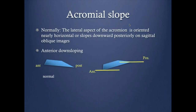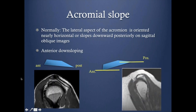Anterior downsloping of the acromion is seen only in the sagittal plane. Normally, the anterior part of the acromion is higher than the posterior part. Anterior downsloping is the opposite — when the anterior part is lower than the posterior part — and this is at risk of causing impingement. This is what we call anterior downsloping of the acromion.